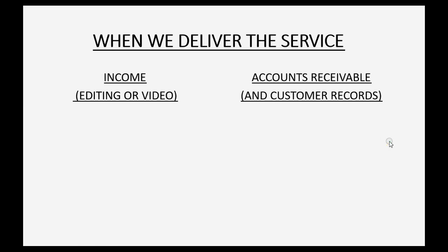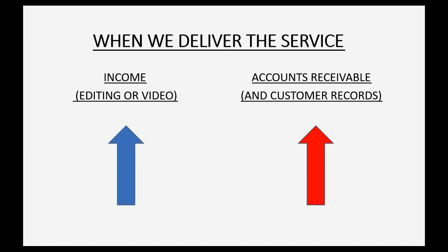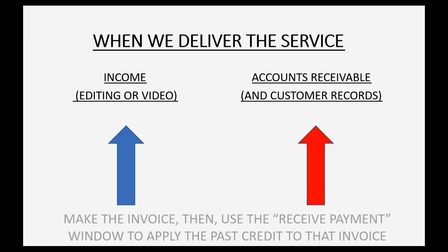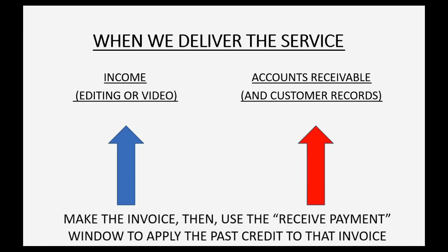At the moment we actually deliver the service, accounts receivable goes back up from the reduced amount that we recorded when we received the payment. And because we delivered the service, the income account that we earned goes up as well at the moment we deliver the service. The way we record this is that we make an invoice the way we normally would when we do a job. Then, after recording the invoice, we use the receive payment window to apply the new invoice we just made to the past credit at the moment we received the money.